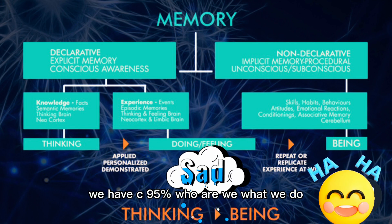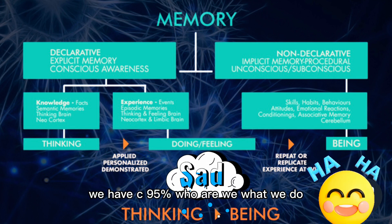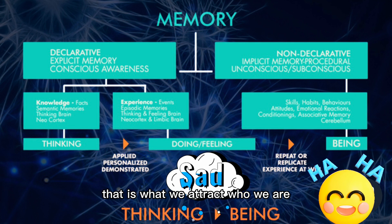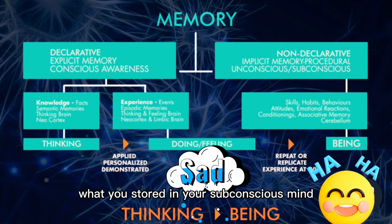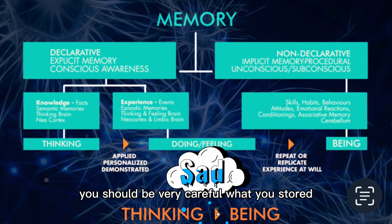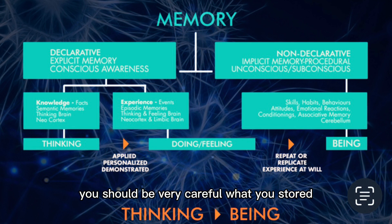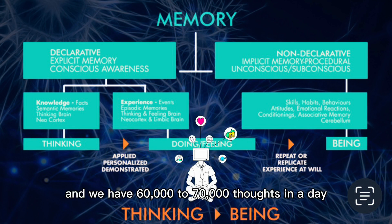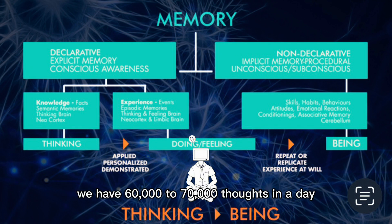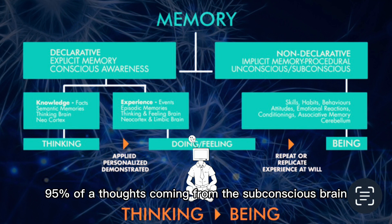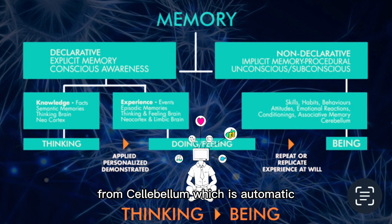95% of who we are is what we attract. So you should be very careful what you store in your subconscious mind. We have 60,000 to 70,000 thoughts in a day, and 95% of those thoughts come from the subconscious brain — from the cerebellum — which is automatic.